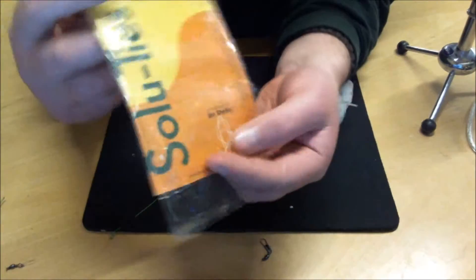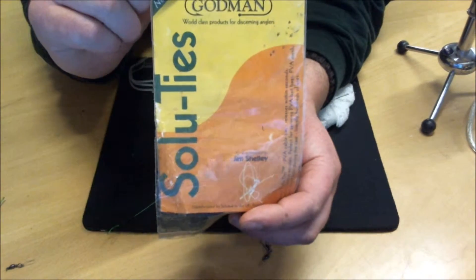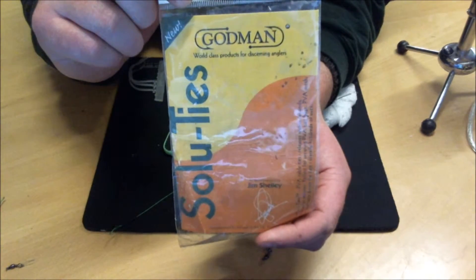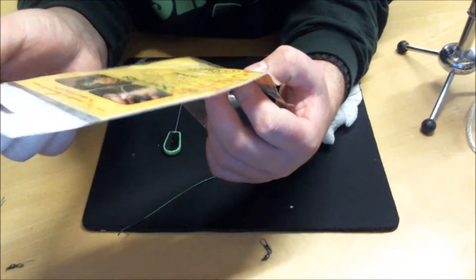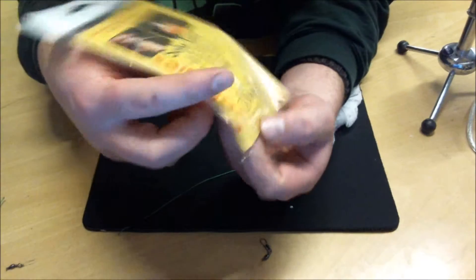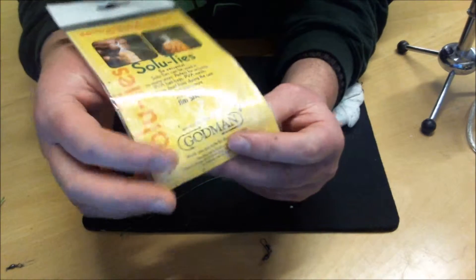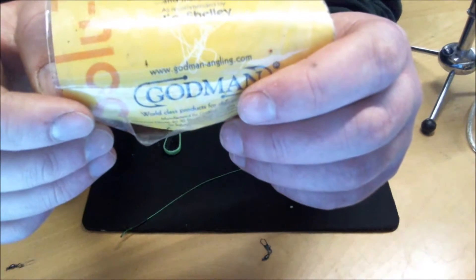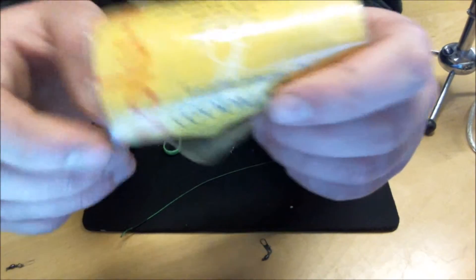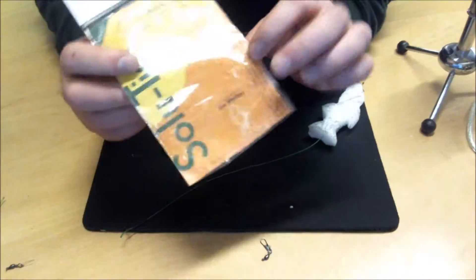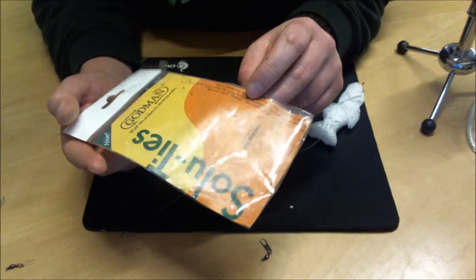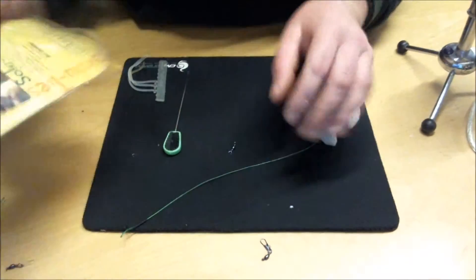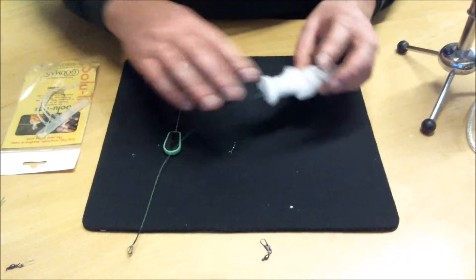There are the zip ties. There's a couple of different brands you can get. It's Solu ties that I've got from Godman. There is a website. This is no way am I promoting this at all, I'm just sharing with you guys as much as I can. Godman-Anglin.com. I got given these, but I'll definitely be buying them again. But there you go, that is pretty much it.